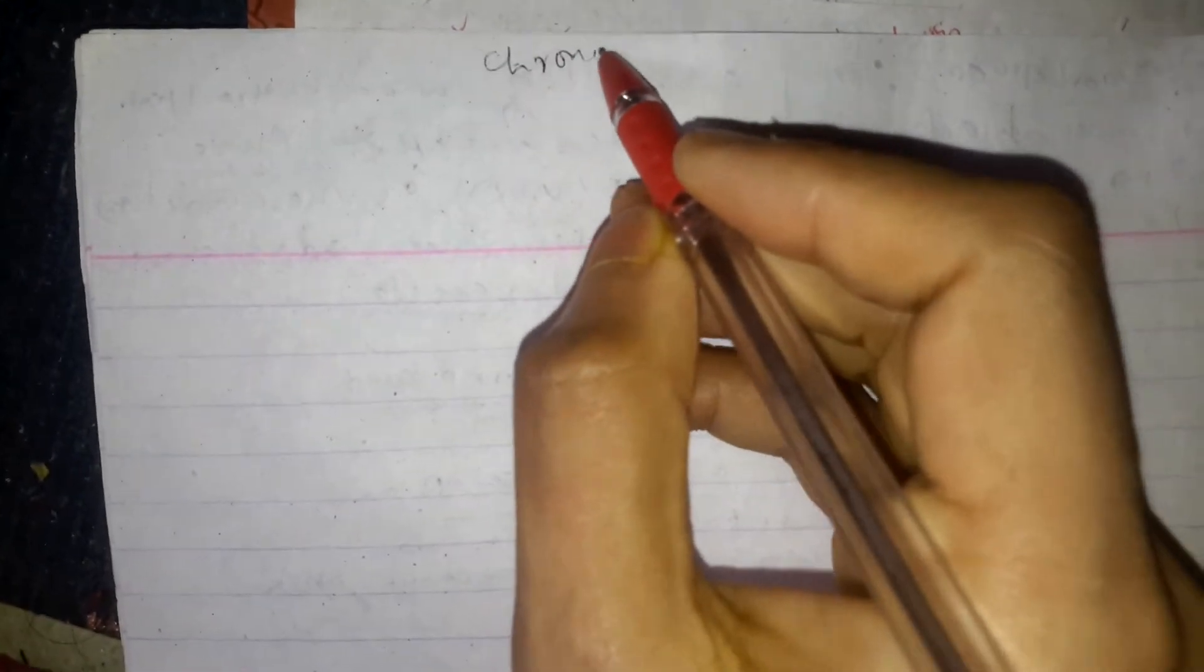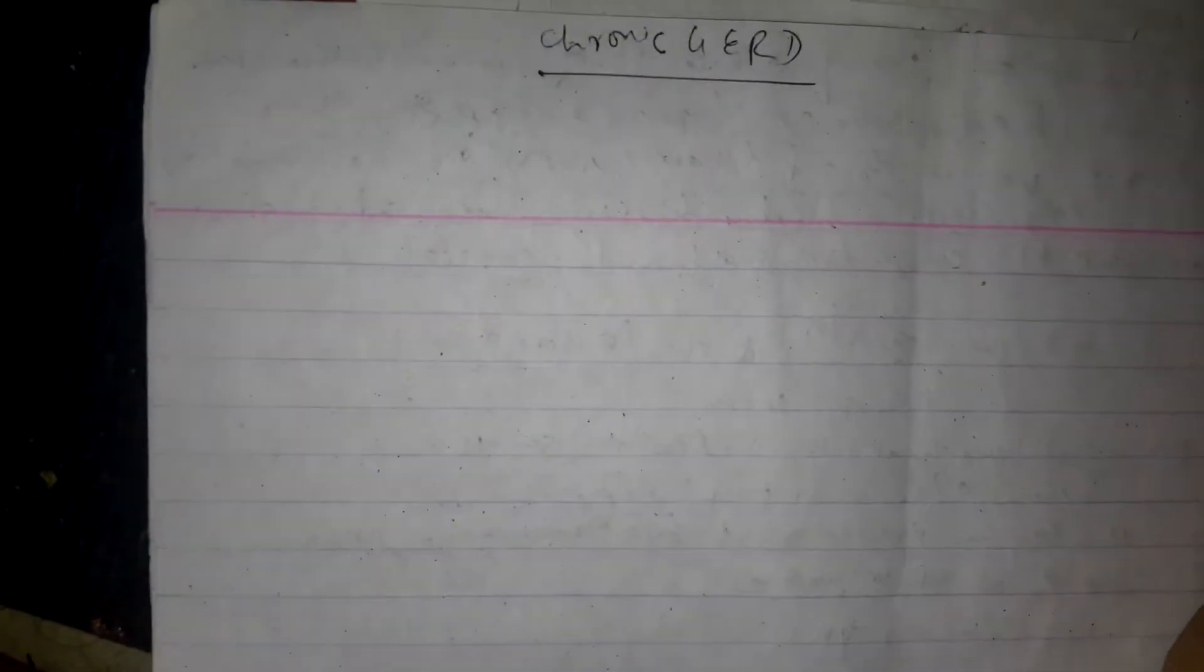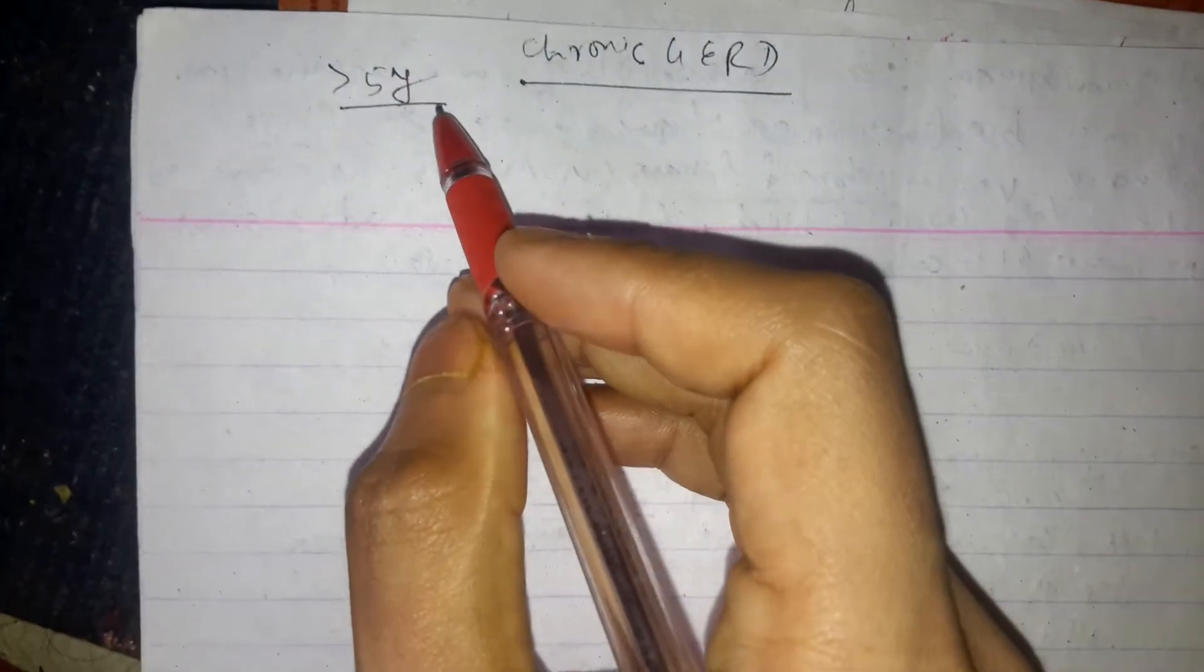Let's discuss chronic GERD, gastroesophageal reflux disease. Whom to scope, whom to do upper GI endoscopy? In chronic GERD, if patient has history of greater than five year history of chronic GERD, then he should be screened.